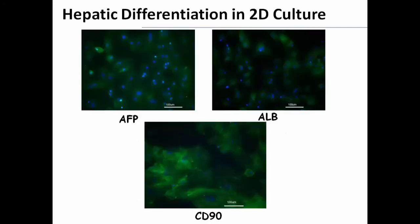In the next step, we analyzed the hepatic proteins in 2D and 3D culture using alpha-fetoprotein and albumin antibodies. We obtained higher expression of hepatic proteins AFP and ALP in 3D culture compared to 2D culture. The expression of CD90, a stem cell marker, showed no change.